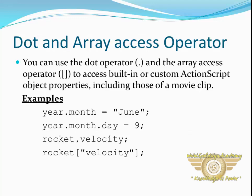Dot and array access operators: you can use the dot operator and the array access operator to access built-in or custom ActionScript object properties, including those of a movie clip. Example: year.month = June; year.month.day = 9; rocket.velocity versus rocket["velocity"]. The last two examples have the same meaning, but the first uses the dot operator and the second uses the array access operator.